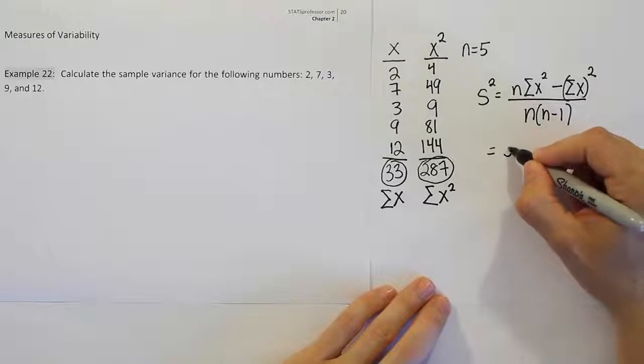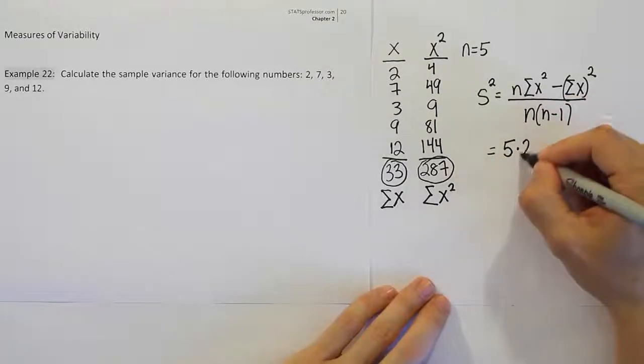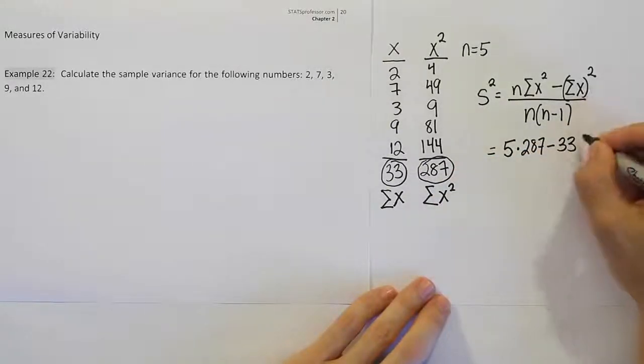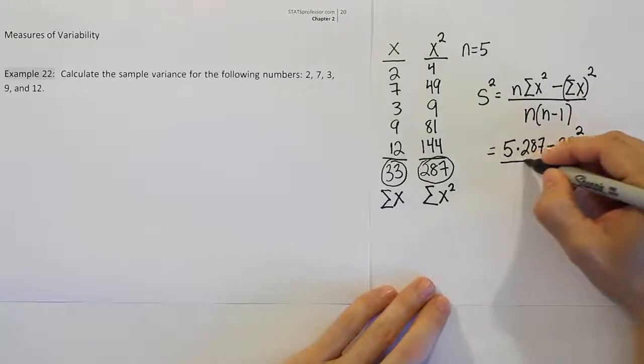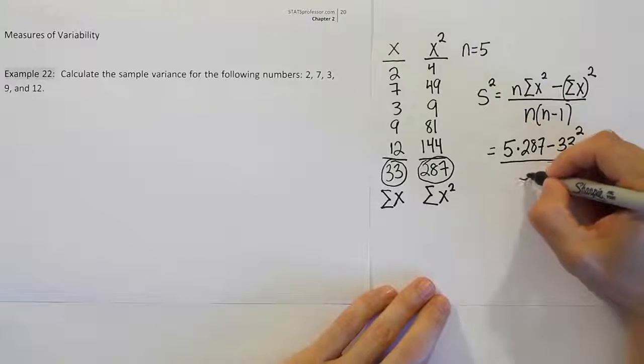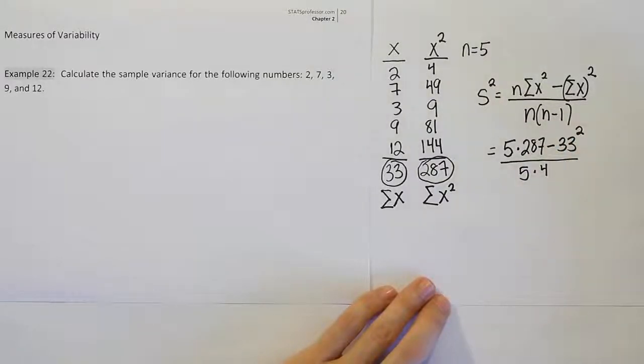So n is 5. The sum of x squared is 287 minus the summation of x, which is 33 quantity squared. And then lastly, we're going to have n, which is 5, times n minus 1, which of course is 4.